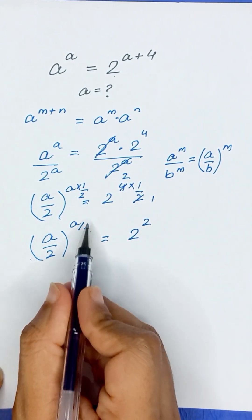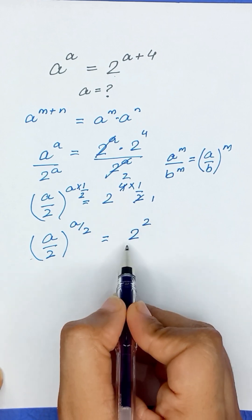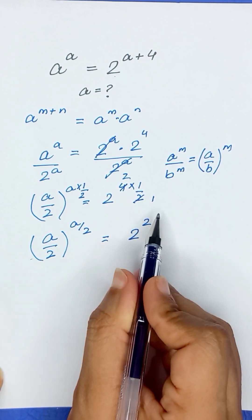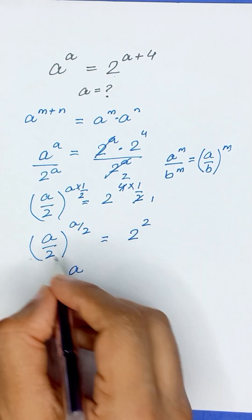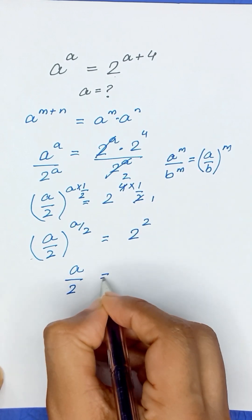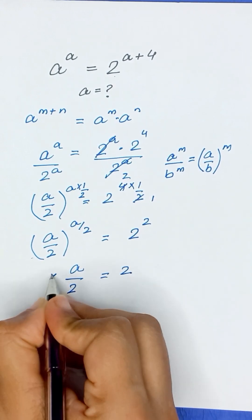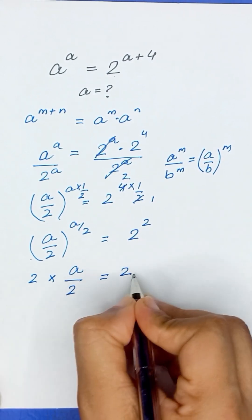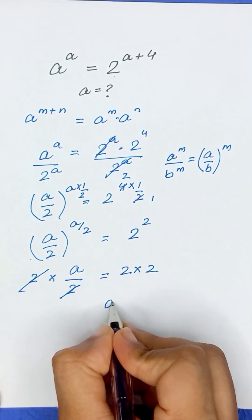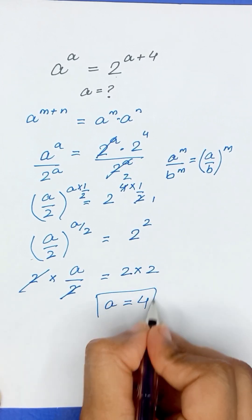On the left-hand side, a divided by 2 has its own power a divided by 2, and on the right-hand side 2 squared has its own power 2. So equating both sides, a divided by 2 equals 2. Multiplying 2 on both sides, the value of a will be equal to 4. Thanks for watching.